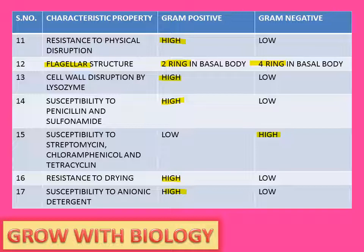When we look at the flagellar structure, the basal body of gram positive has two ring structures, whereas the basal body of gram negative has four ring structures. Cell wall disruption by lysosomes is high in gram positive. Susceptibility to penicillin and sulfamide is high in gram positive.